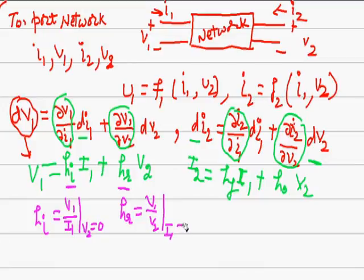We are defining HF as I2 over I1, forward current ratio, or called forward current gain, when output is shorted.